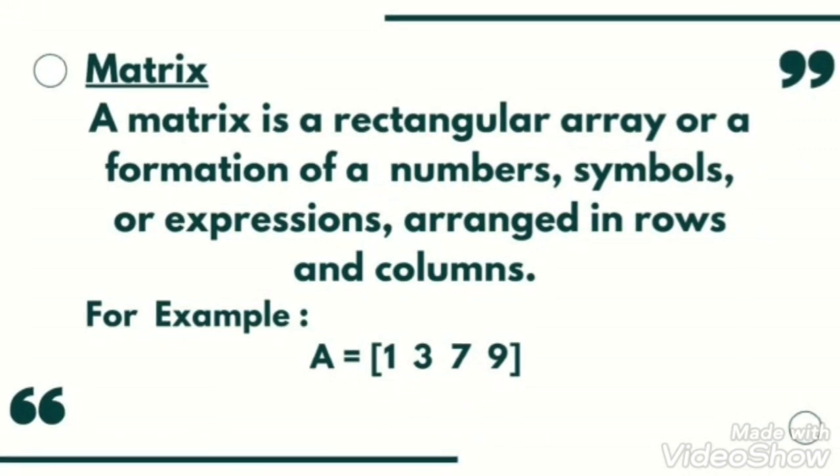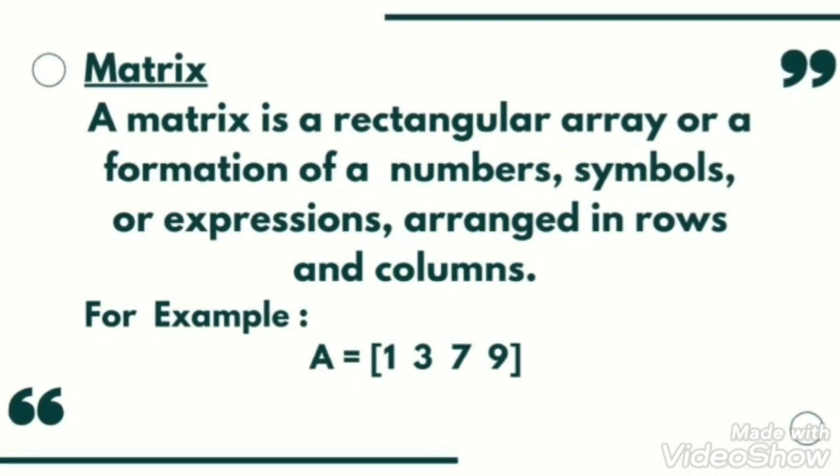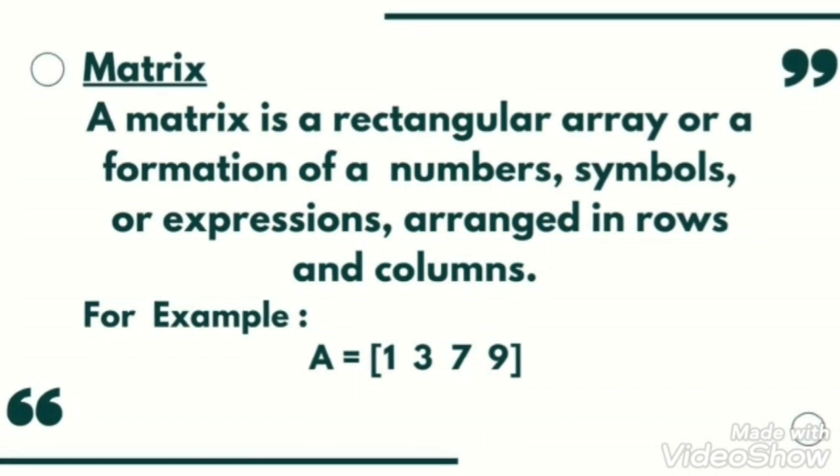Matrix is an arrangement of real number entries within braces. There are two terminologies: first is row and second is column. Row formation is horizontal form and column is vertical form. In this example, A = [1 3 7 9].